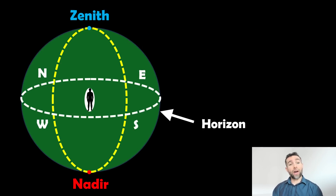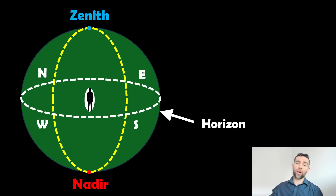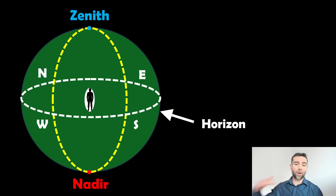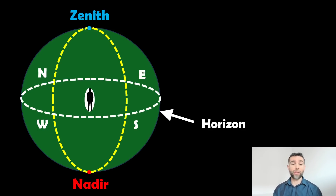We also have our horizon. If we look out into the distance we have a horizon there, with north, south, east, and west. So we've got our meridian going around and we've got our horizon as well. These are two local reference points to us on the surface of the earth.